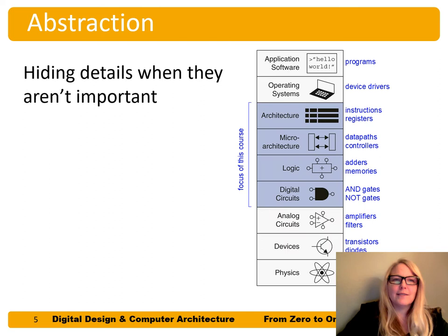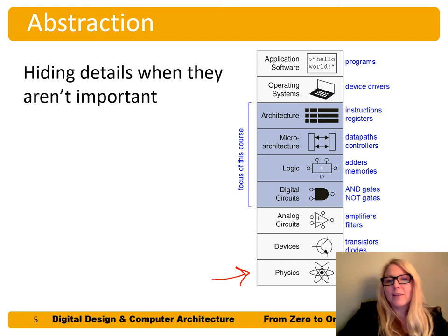Abstraction is hiding details when they're not important. Here is a kind of golden thread of abstraction for digital design and computer architecture. At the very bottom of these abstraction layers is physics — the electrons that these devices are built from — and then we have devices like transistors and diodes. We'll talk about transistors in this class.